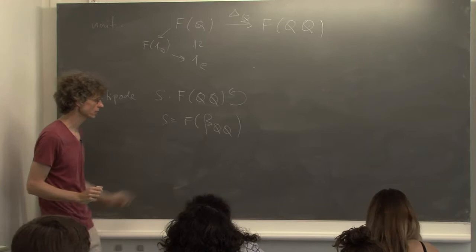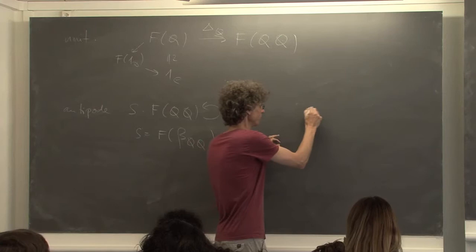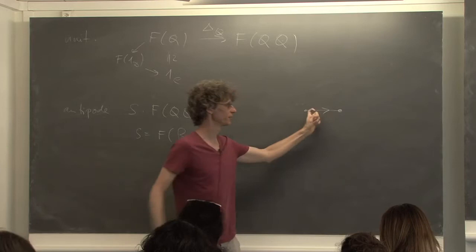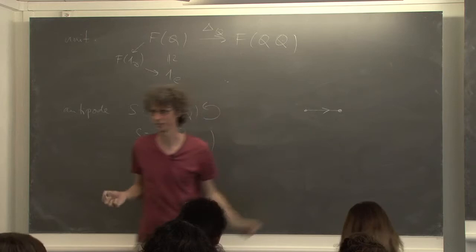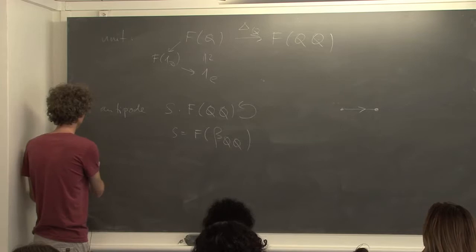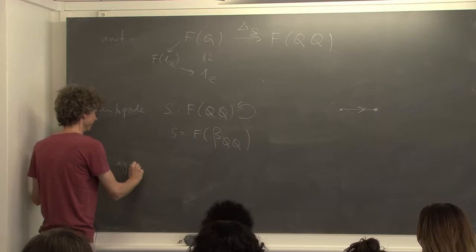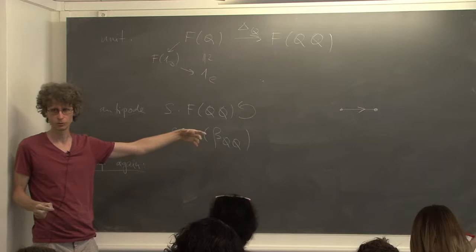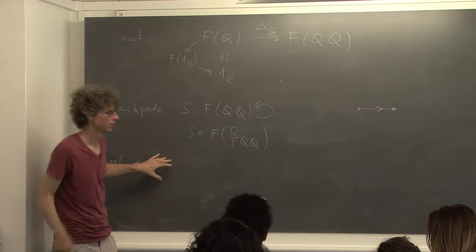And the antipode: S to itself is simply F of beta_{QQ} — where this comes from imagining you have the element going that way; to get the inverse you just exchange those things and you get the inverse. Okay, so let me now prove this again. I think I didn't prove the antipode part last time, so let's get to the antipode part. There was some simplicial argument for why everything works. Let's just have a look at the low-level details.